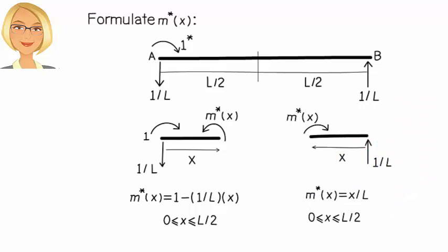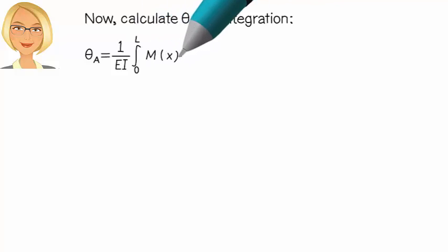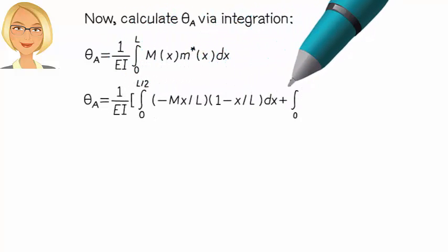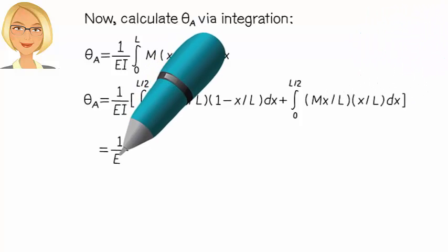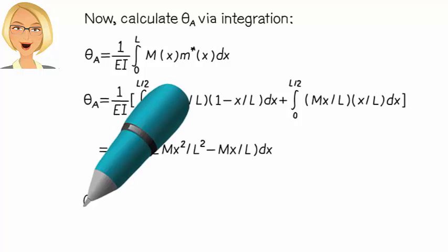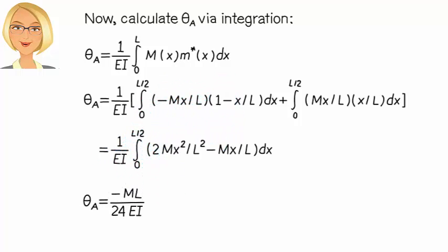So, theta A can be expressed as... It equals negative ML over 24 EI. But what does the negative sign mean here?